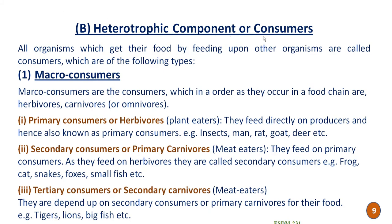The heterotrophic component, also called consumers, includes all organisms that get their food by feeding upon other organisms. Among heterotrophs, the first type is macro-consumers. Macro-consumers occur in the food chain as herbivores, carnivores, or omnivores. Primary consumers, or herbivores, are plant eaters — they feed directly on producers. Examples include insects, man, rat, goat, and deer.